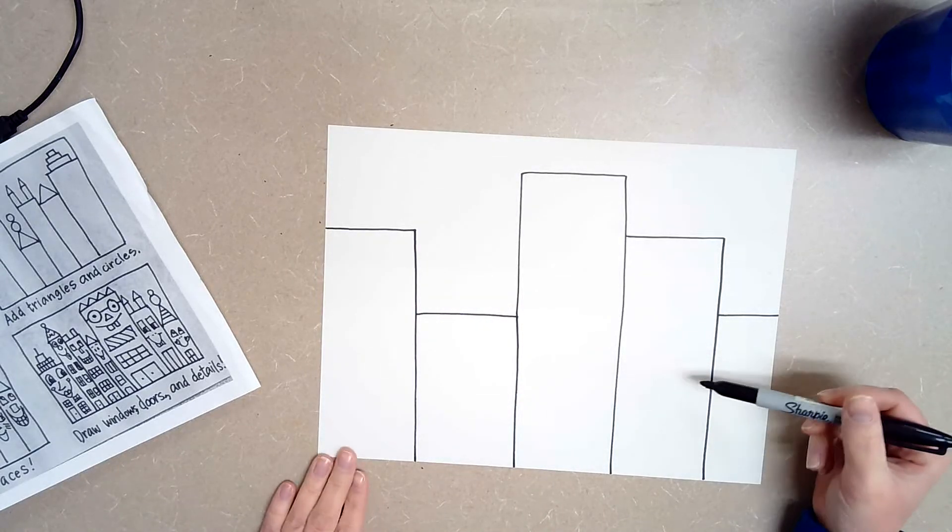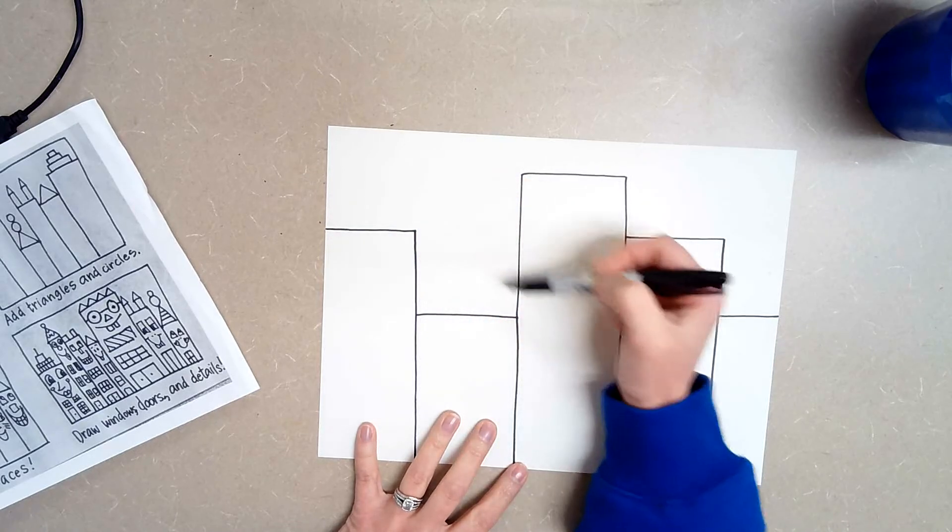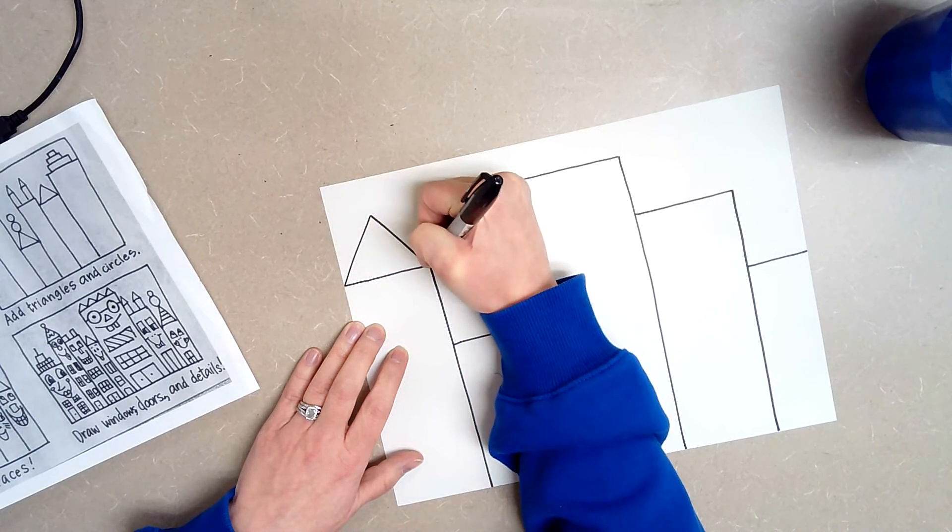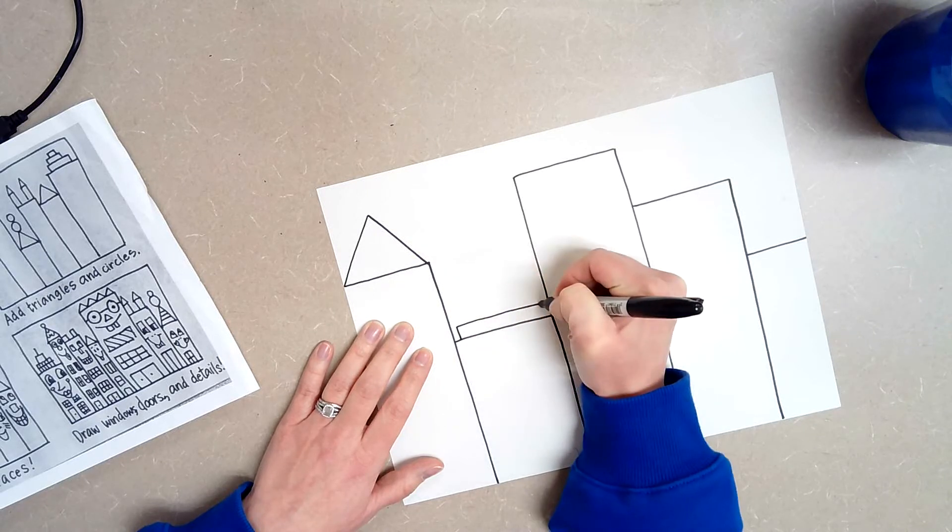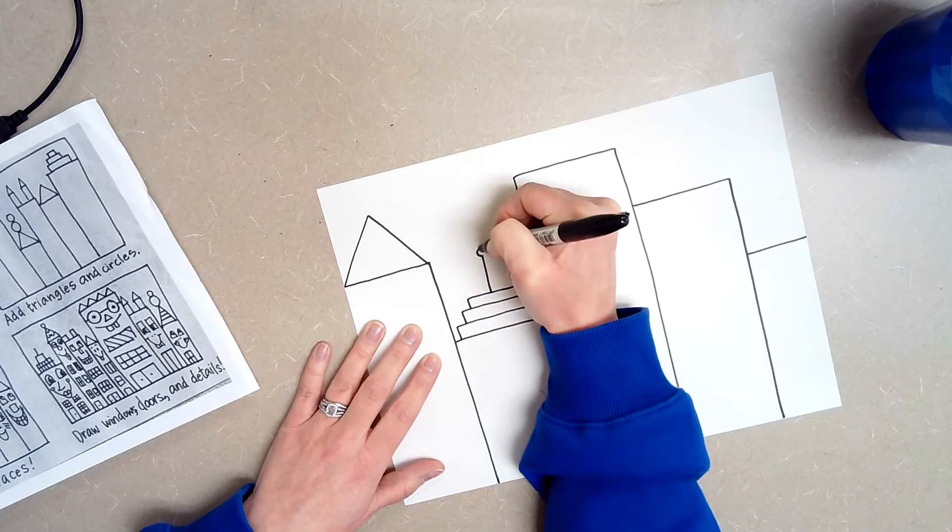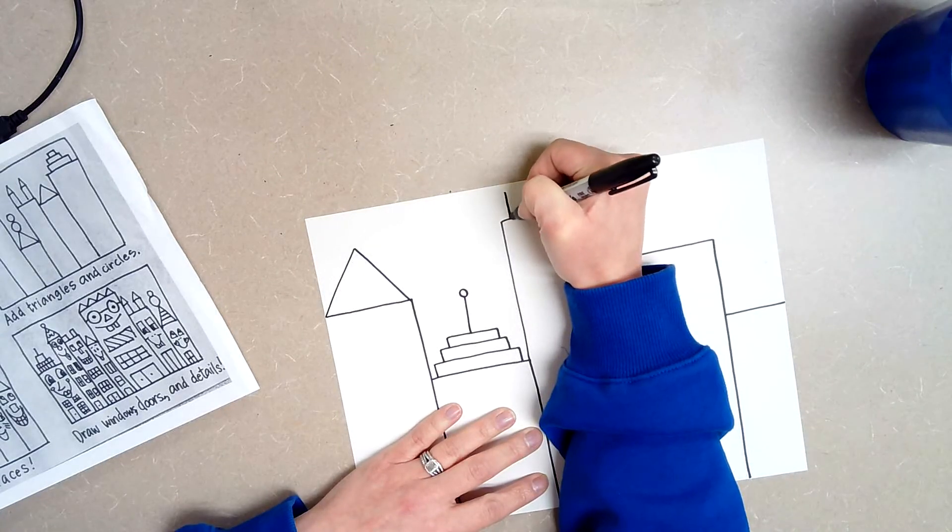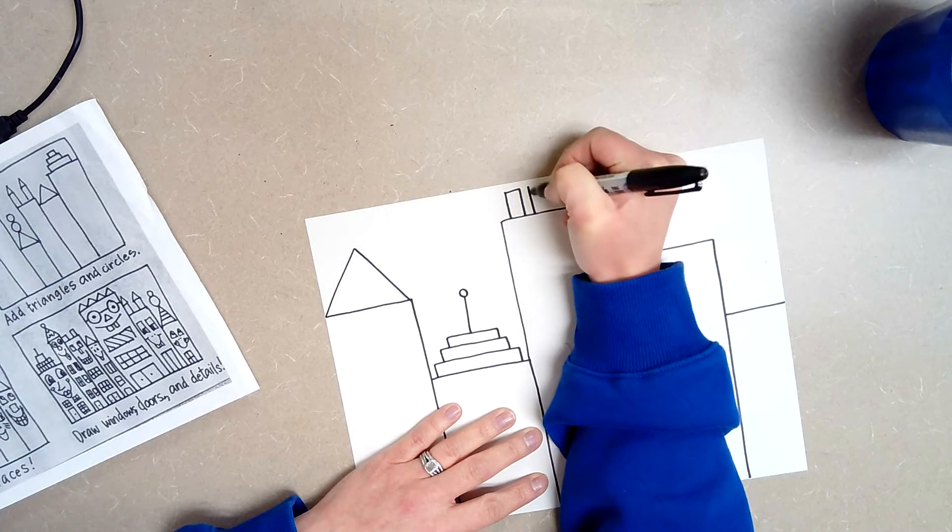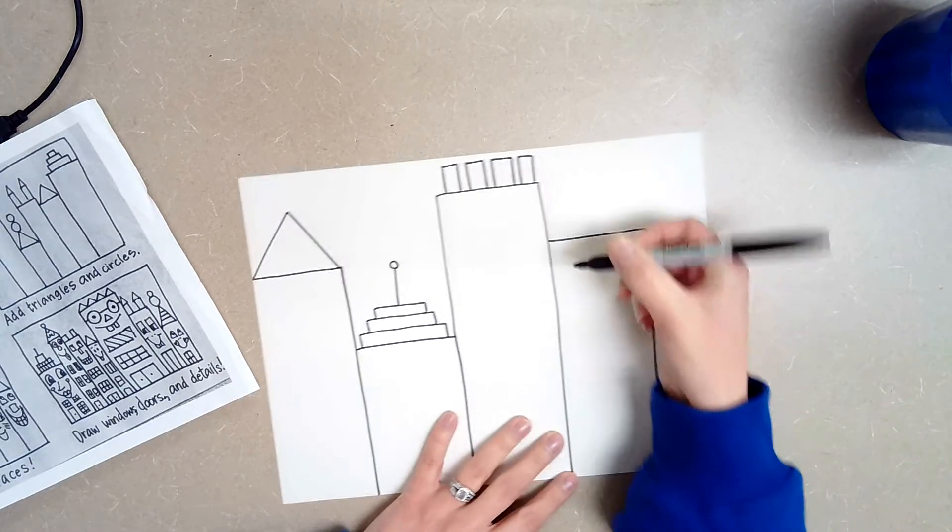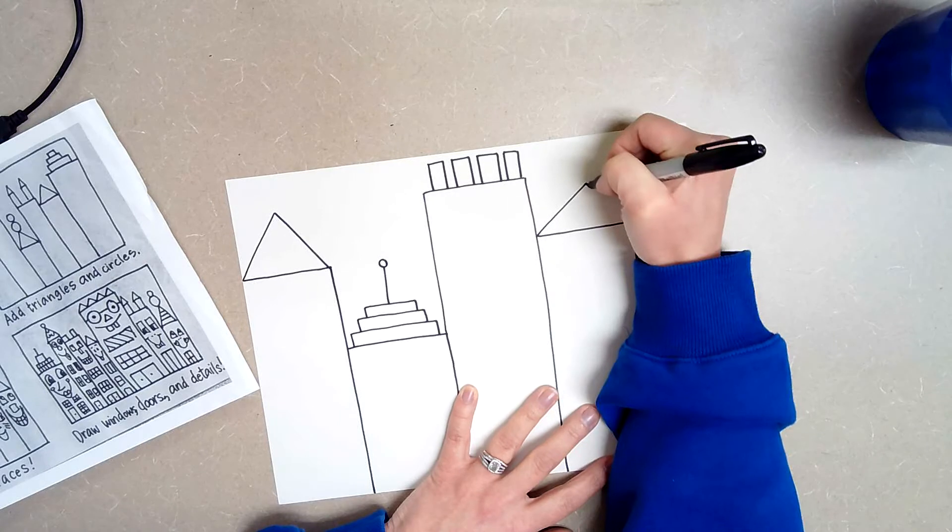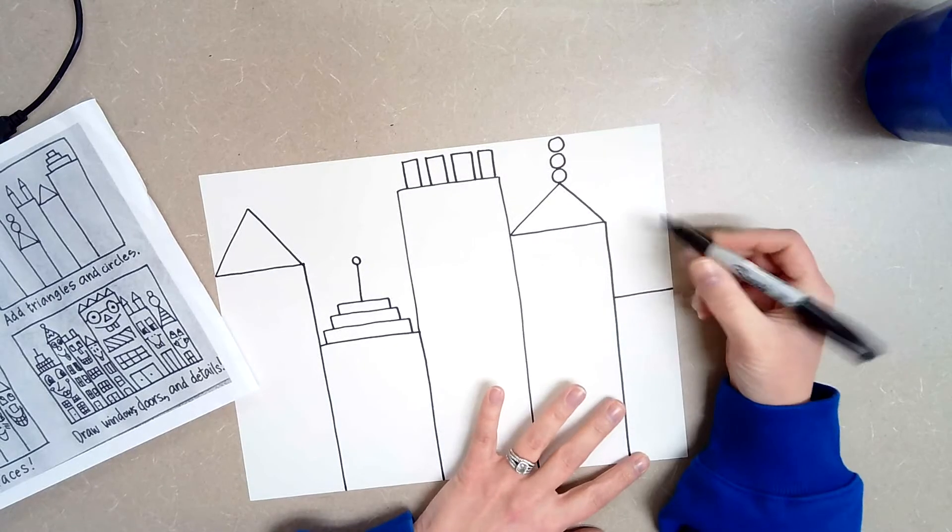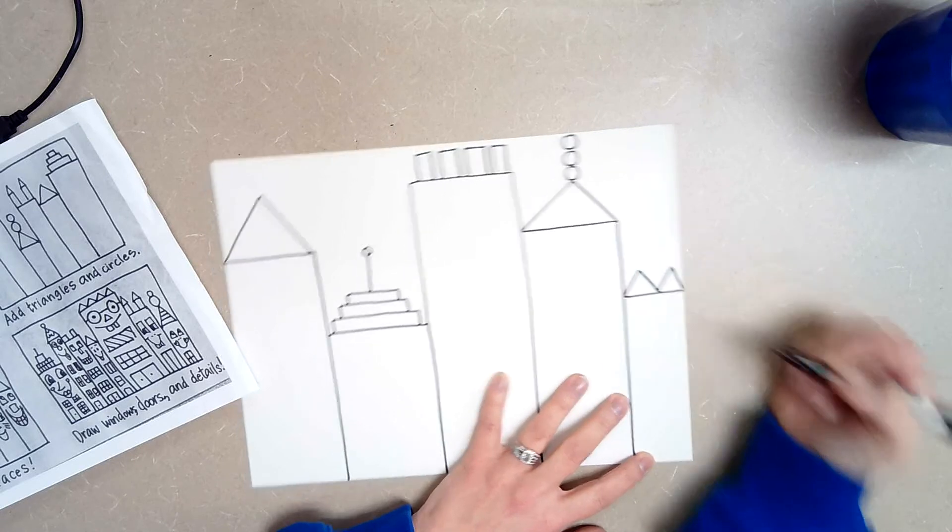Okay, once you have all of your rectangles then you are going to add the tops or the roof to all of your buildings. So we are going to make all of these look a little different. The first one I am going to do maybe just a triangle. This one I am going to add kind of like steps so it looks like a tower. Maybe it has got a little antenna there on the top. Maybe this one is going to have just like little rectangles that go across the top. Then maybe I am going to do a triangle with some circles. And then one more. That one is just going to have two triangles.